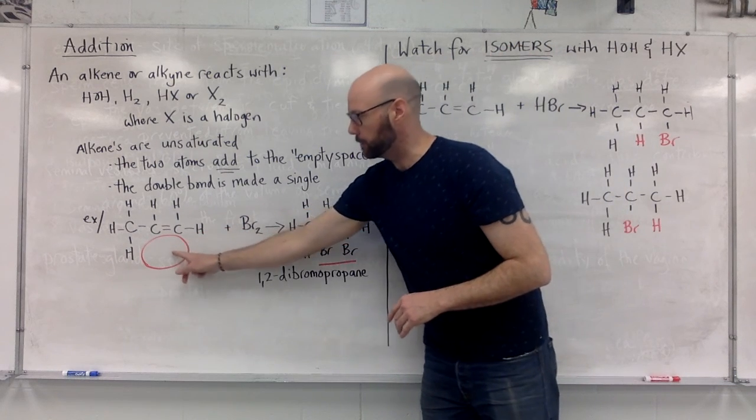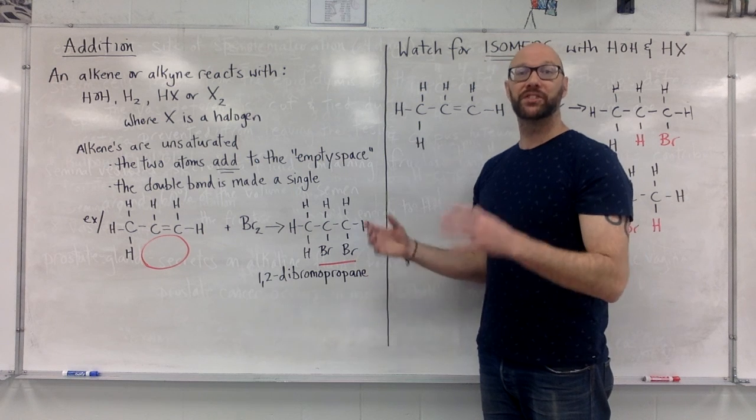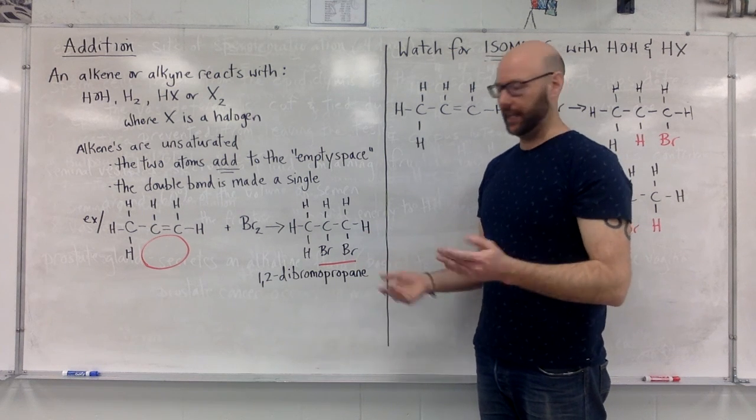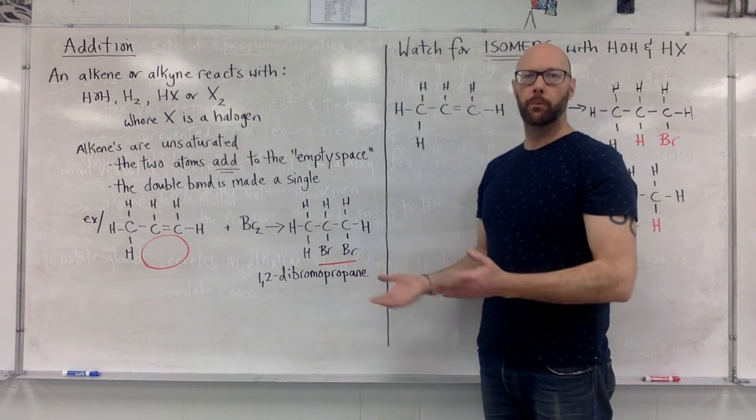Here we have the two empty spots, Br2. The two bromines go in those two empty spots. We end up with a saturated alkyl halide. It happens to be 1,2-dibromopropane.